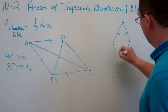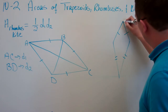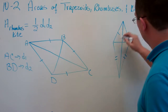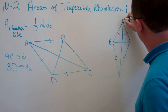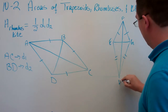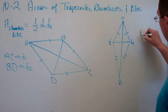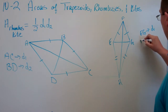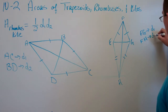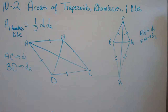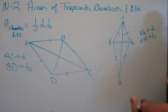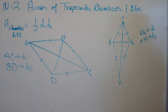Here we have a kite — here's one diagonal and here's the other. Let's call it EFGH. For our kite, EG is diagonal one and FH is diagonal two. You simply take the length of FH, multiply it by the length of EG, and then take half of that number.